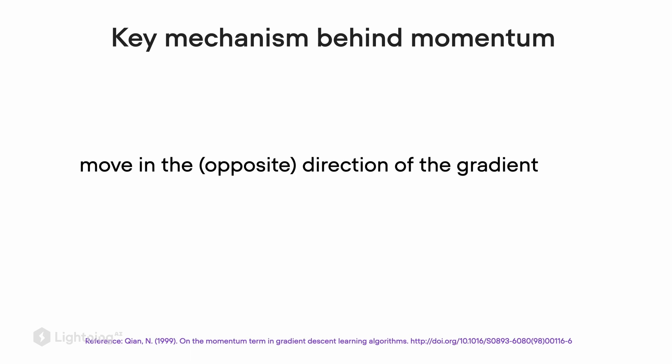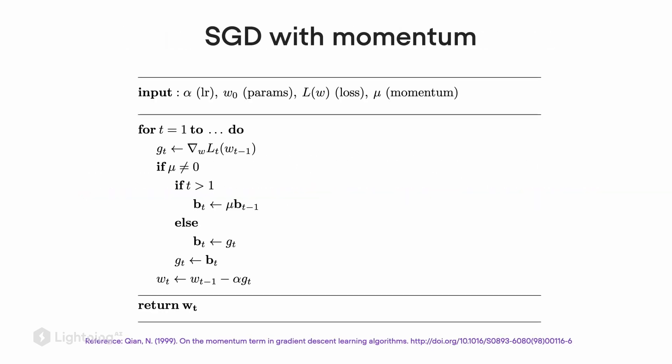The key mechanism behind momentum is that we move still in the opposite direction of the gradient. Remember from Unit 3, when we talked about Stochastic Gradient Descent, the weight updates are always in the opposite direction of the gradient. We still keep that part. However, now with this momentum term, in addition to that, we also move to the averaged direction of the last update. In each step of the gradient descent update, we also take the averaged direction into account and add it to our update procedure.